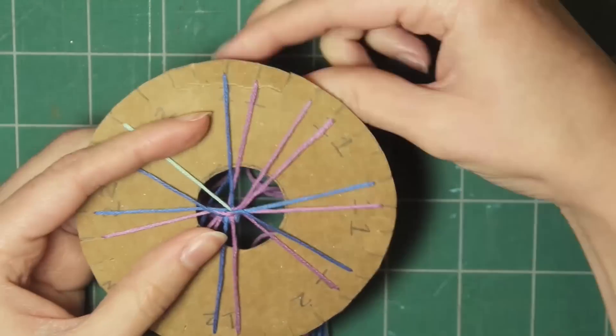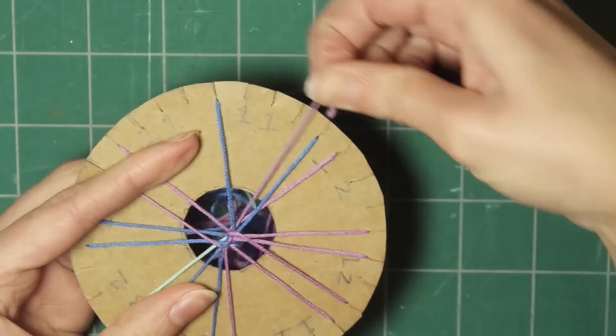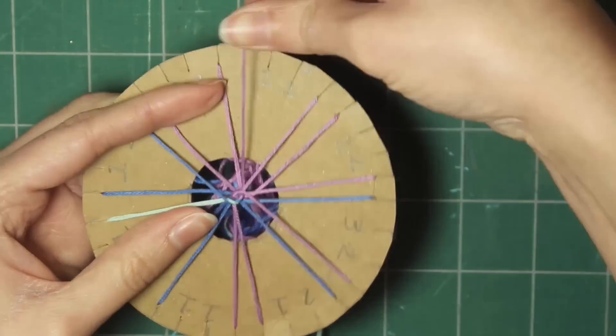So you're just going to repeat the same pattern over and over for the entire bracelet. The top right goes to the bottom right, bottom left goes to the top left. And just keep turning the wheel.